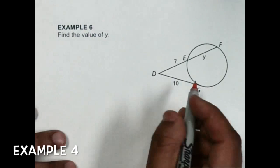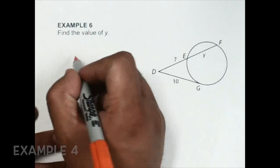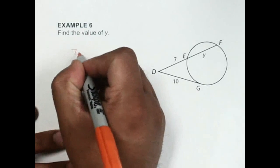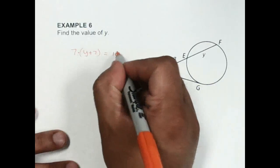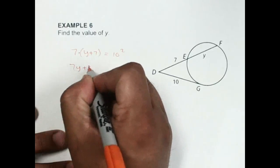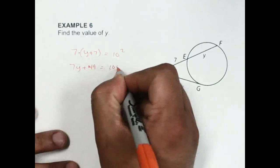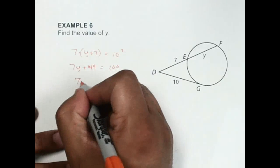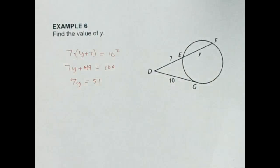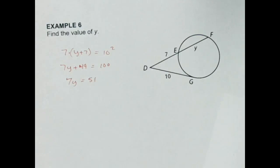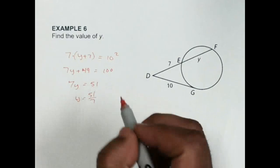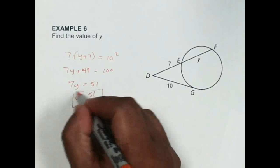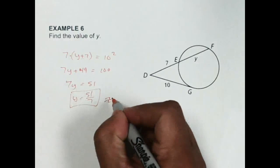Alright, so let's try this again. I'm going to have example 6. This is going to be 7 times Y plus 7 is equal to 10 squared. So 7Y plus 49 is equal to 100. 7Y is equal to 51. And then if we take 51 and we divide by 7, we get Y is equal to 51 over 7. That does not simplify, so that would be my answer.